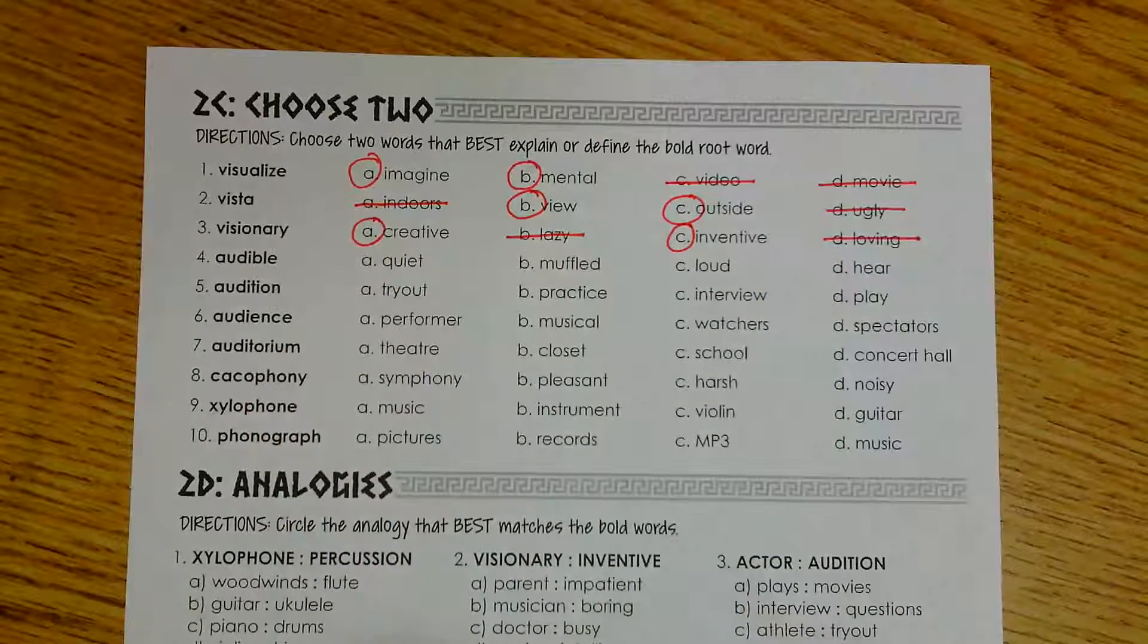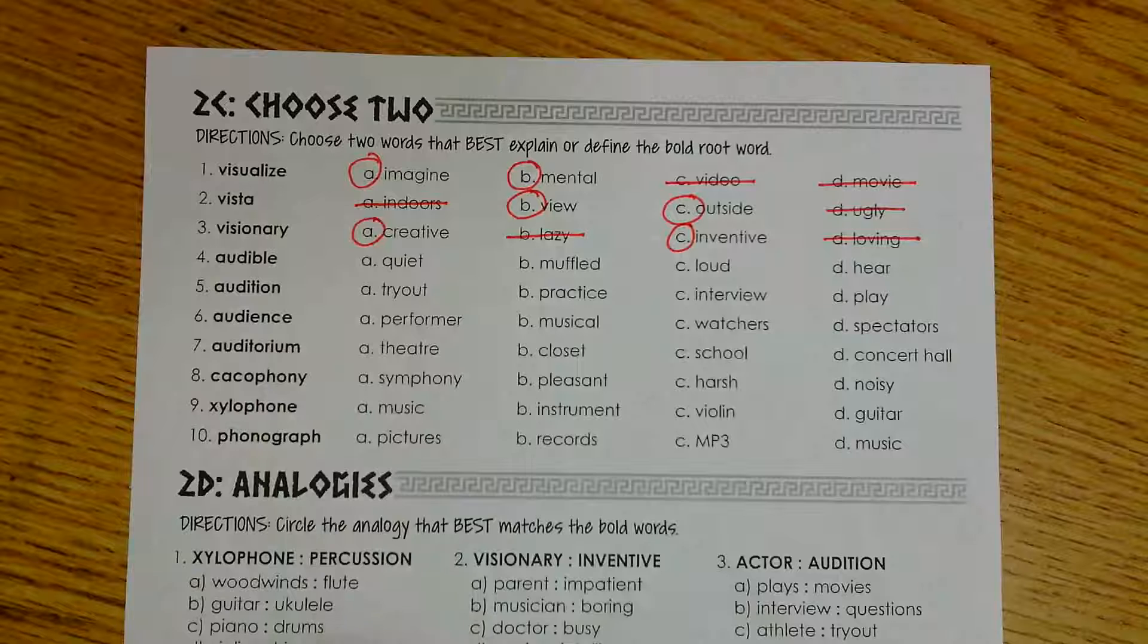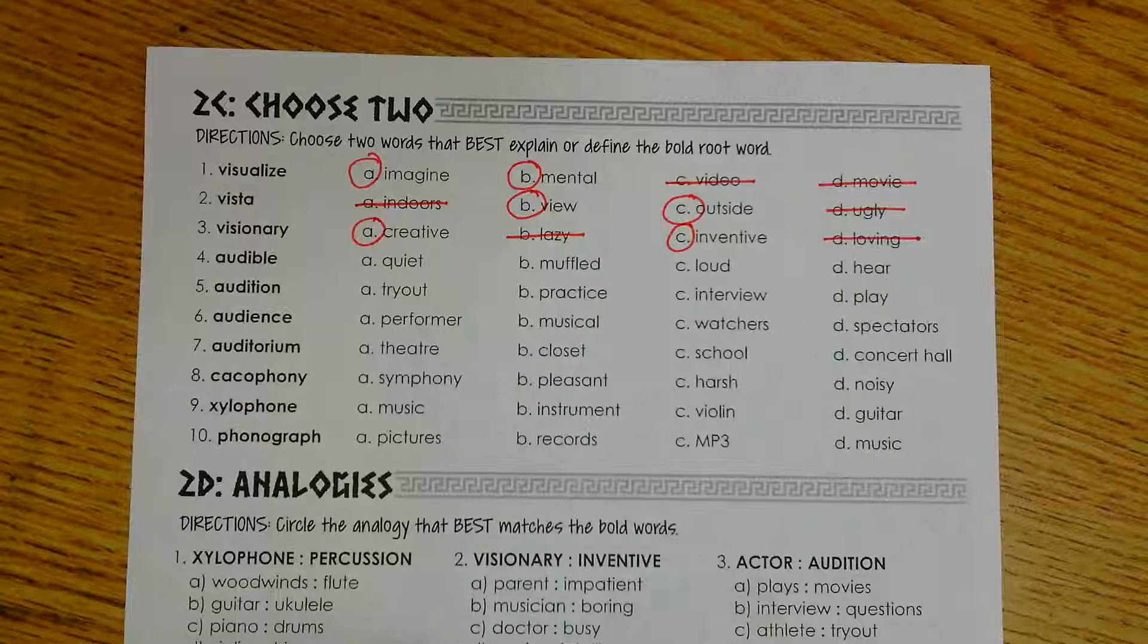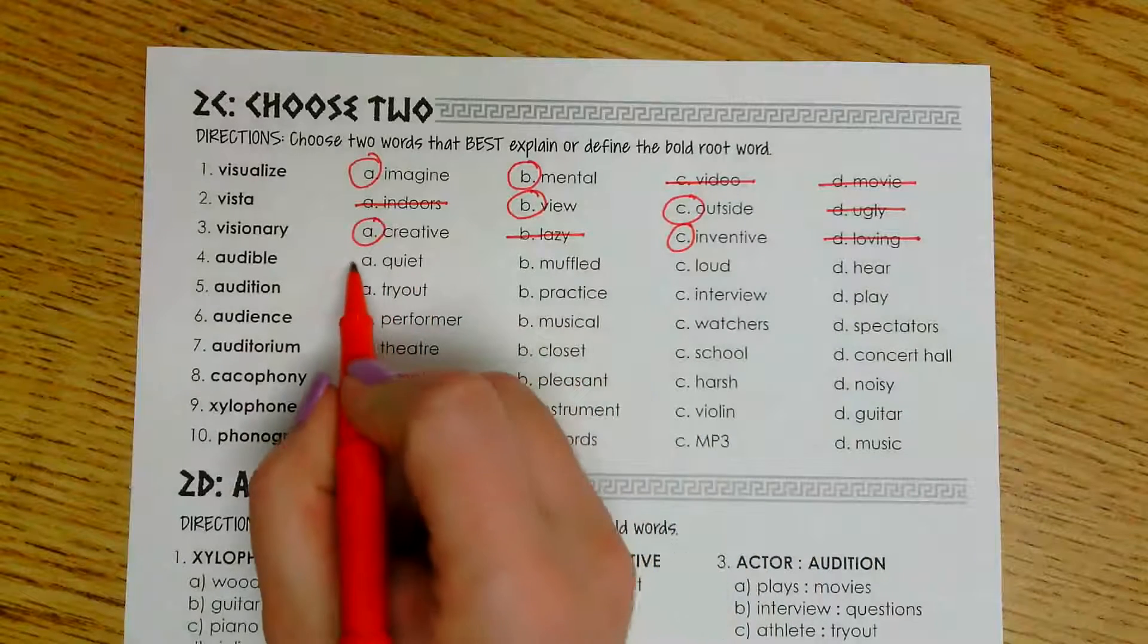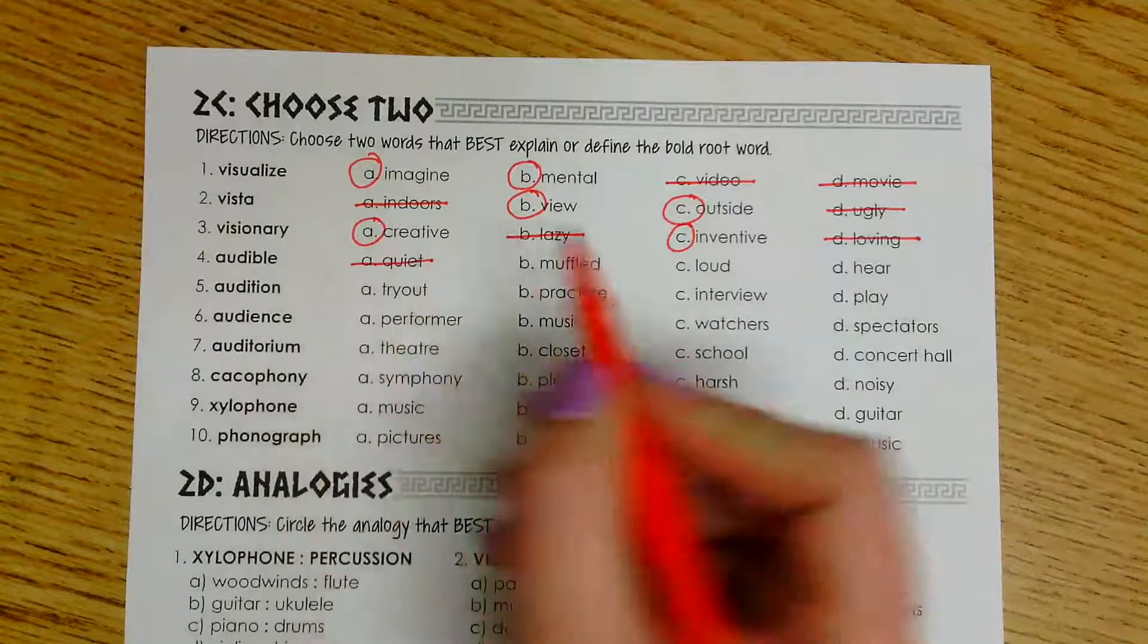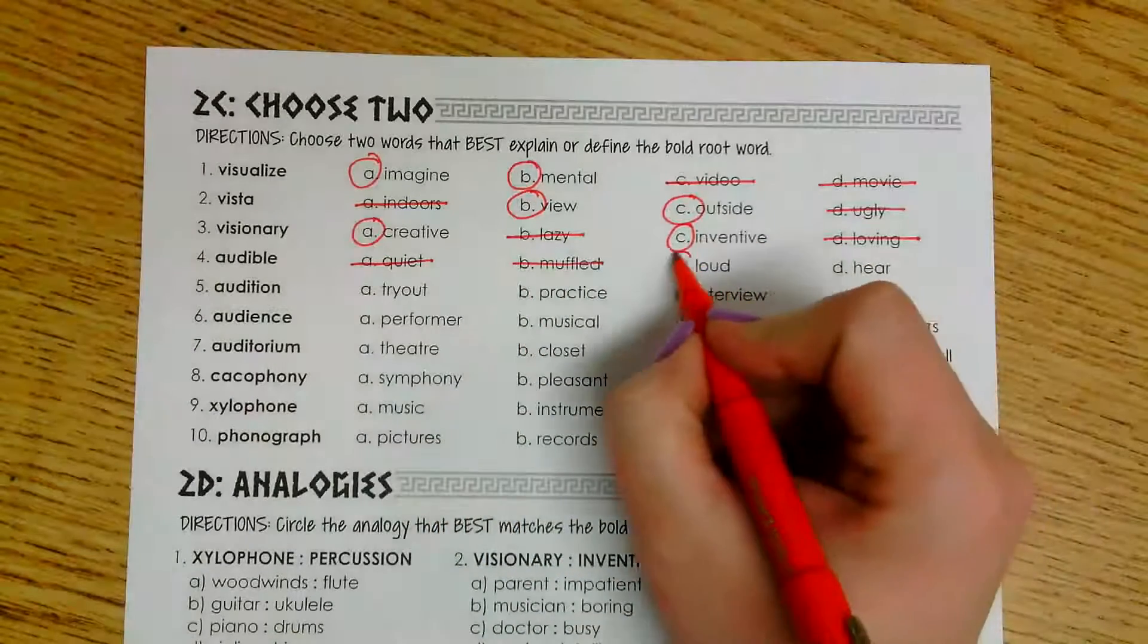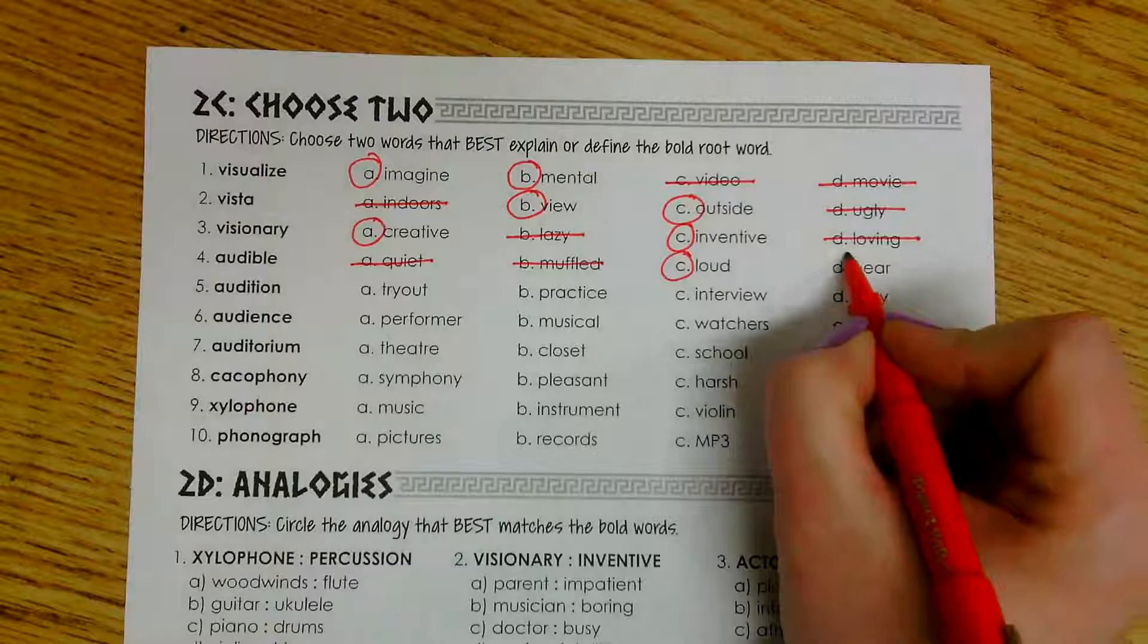Number four is audible. We have quiet, muffled, loud, and hear. Well, if something is audible, it's a sound that you are able to hear. So there's a good chance it will not be quiet and it's not going to be muffled because that would make it hard to hear as well. So that leaves me with loud and hear.